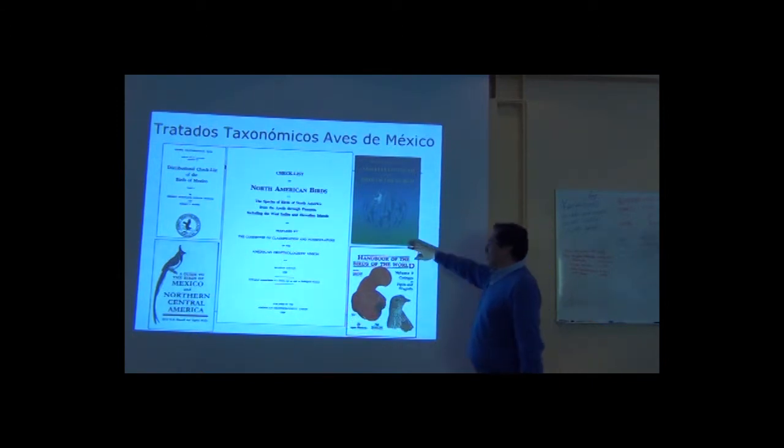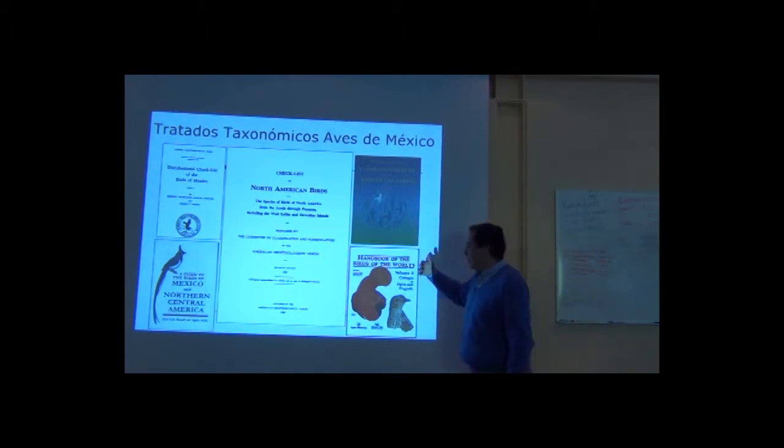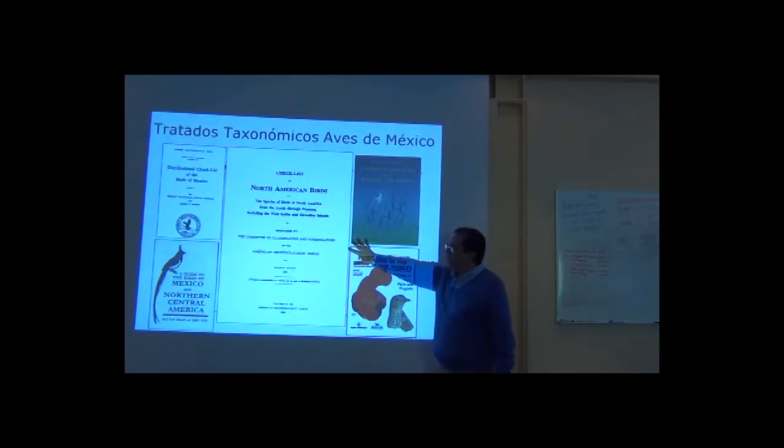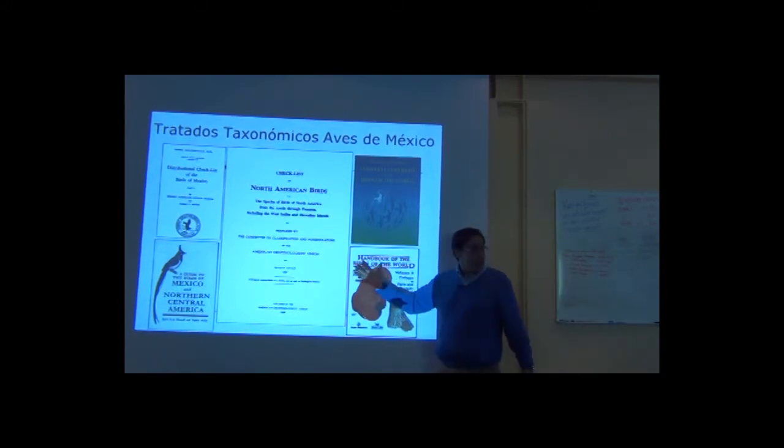But here's an example. Again birds, again Mexico. However, we have at least these five classification schemes for Mexican birds. And all of those are used. And all of those are present in publications, and are present in research, and are present in the endangered species lists. So it's messy.